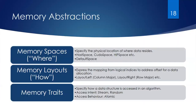The first set of abstractions in COCOS is memory abstractions. The first concept is memory spaces, which specify the physical location of where data resides. That can be host space — representing the CPU's memory — CUDA space for an NVIDIA GPU's memory, or HIP space for AMD GPUs. There is also a default space that can be configured at compile time, allowing COCOS to switch between these options.